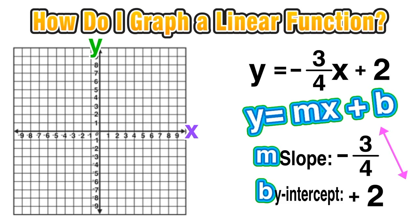So we know the graph is going to hit that y-axis at positive 2. The first step to graphing a linear function in slope-intercept form is to plot that y-intercept. In this case, I'm putting a point at positive 2 on the y-axis. Now we're ready to build that line from that point.